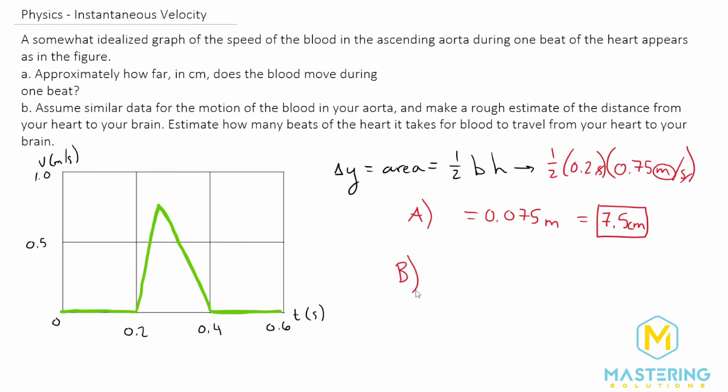Now for part B, they want us to figure out how many beats it takes to go to your brain. We have to make an assumption here, and I don't ever like it whenever they make us make an assumption because then of course we all could get potentially different answers. And the book estimates that it's about 30 centimeters from your heart to your brain, so we're going to be using that.